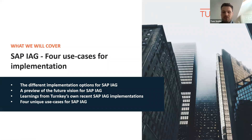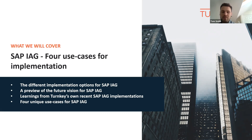In this session, we'll hear from Gabs who will outline the different implementation options for SAP IAG and provide a future vision showing the roadmap over the next few years. He'll then hand back to us at Turnkey, where we'll draw on his experience to go through our four unique use cases while sharing some of our own implementation stories. We've got four broadly applicable use cases that fit most organisations we work with. If you have any questions, feel free to write them in the chat or Q&A box and we'll answer as many as possible at the end.